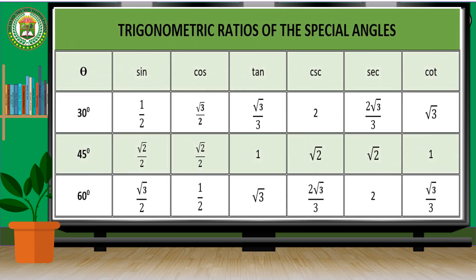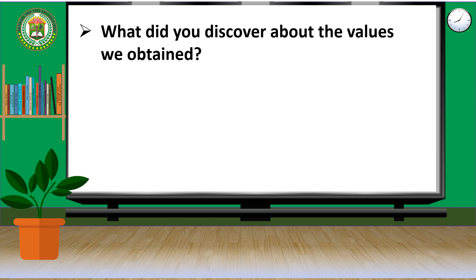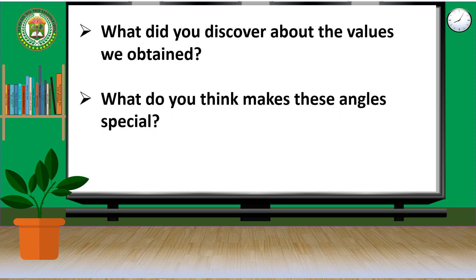To summarize the 6 trigonometric ratios of the special angles 30 degrees, 45 degrees, and 60 degrees, we will use this table. One of the reasons why they are special is because you can find the 6 trigonometric ratios without using a calculator.